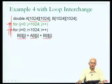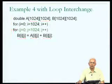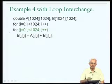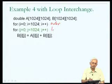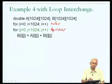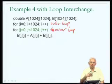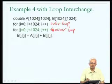If I modify the program so that the I loop is the outer loop and the J loop is the inner loop — previously the J loop was on the outside — the situation changes. Previously, the J loop was outer, but now the J loop is the inner loop.